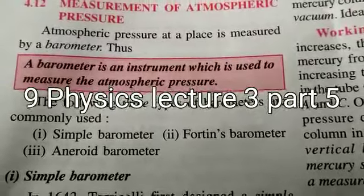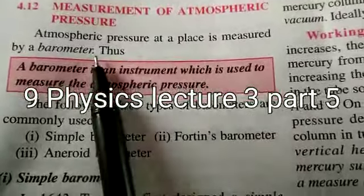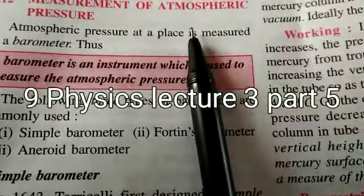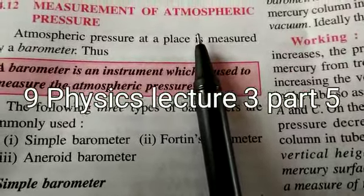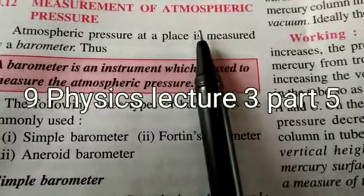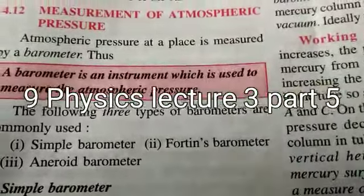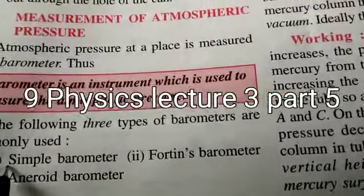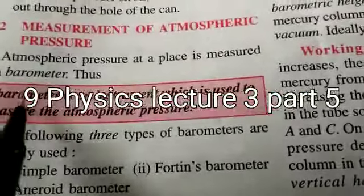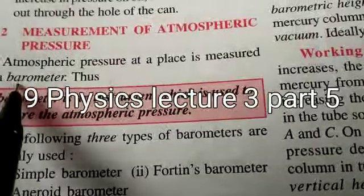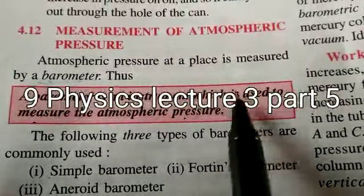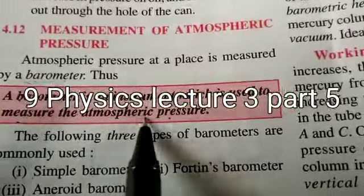So now, if we have atmospheric pressure around us, we want to measure the quantity of the atmospheric pressure. We need one device or instrument which is being used to measure the atmospheric pressure. Atmospheric pressure is measured with the help of one device or instrument which is known as barometer. What is barometer? Barometer is an instrument which is used to measure the atmospheric pressure.